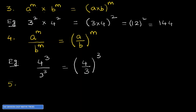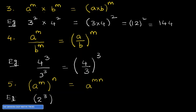Law number 5: power of a power. When we have (a^m)^n, the exponents are multiplied, giving a raised to the power of m into n, that is a^(mn). Example: 2 raised to the power of 3, all raised to the power of 4. We keep the base as 2 and multiply the exponents: 3 into 4 equals 12. So the result is 2 raised to the power of 12.